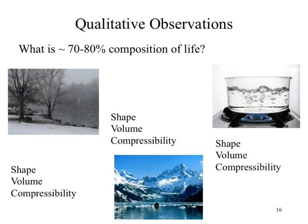Our shape for a solid is in this weird category - we can kind of change it, but it doesn't vary easily. What about the volume for a solid? For any amount of solid, the volume stays relatively constant - we do run into exceptions, but our volume stays constant, invariable, never changes. What about the compressibility? It's very rigid. Most solids do not compress very well - very little, if any at all. Which comes into play when we look at a combustion engine.